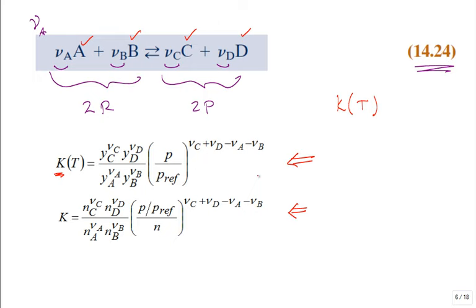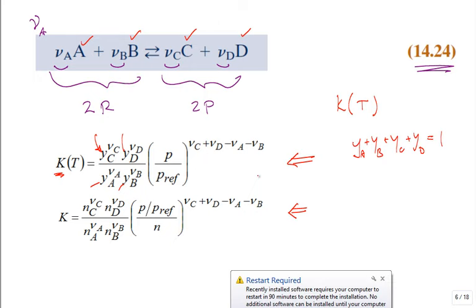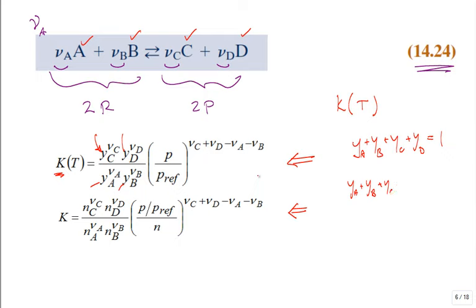At equilibrium, K(T) is equal to an expression involving mole fractions. Y_C is the mole fraction of component C in the gas mixture, Y_D is the mole fraction of component D, Y_A and Y_B likewise. If they're mole fractions in a mixture containing only A, B, C, and D, the sum equals 1. Sometimes we'll also have Y_A, Y_B, Y_C, Y_D plus Y_inert — something that's not participating but is present in the mixture.